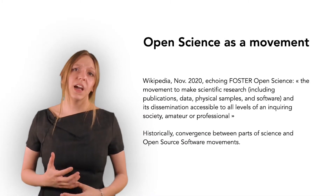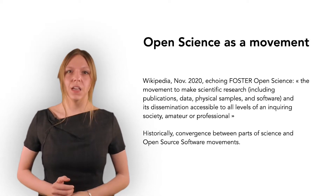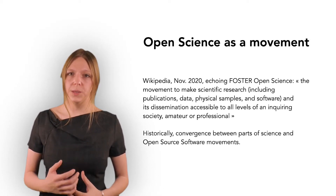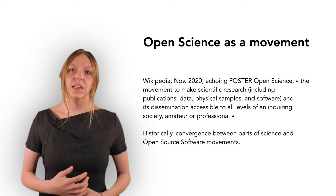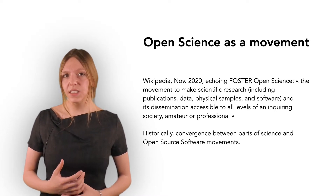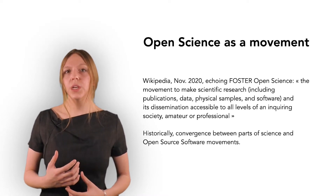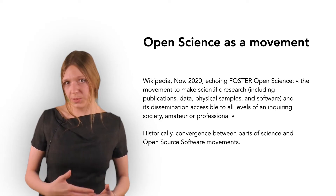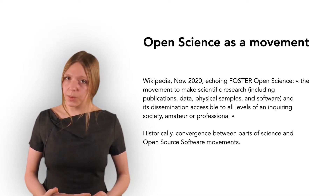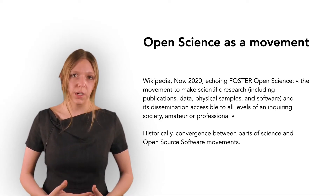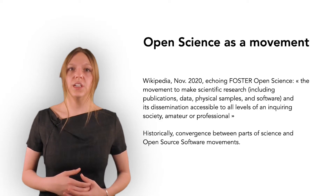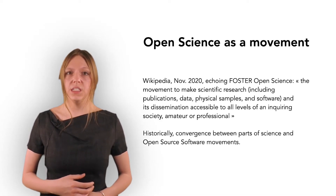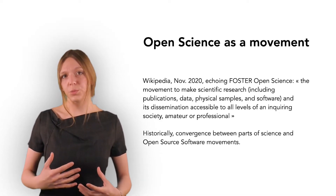So now, let's see how open science is usually defined. A first definition of open science, taken from Wikipedia, is that open science is the movement to make scientific research — including publications, data, physical samples, and software — and its dissemination accessible to all levels of an inquiring society, amateur or professional.